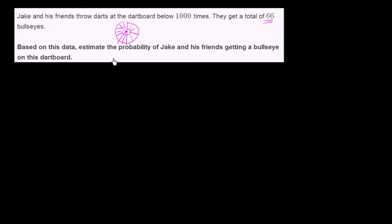Based on this data, estimate the probability of Jake and his friends getting a bullseye on this dartboard. So let's think about it. They essentially had 1,000 trials. 1,000 times they tried to hit the bullseye. And 66 of those times, they did. So it looks like a good estimate for the probability of Jake and his friends getting a bullseye is 66 over 1,000.